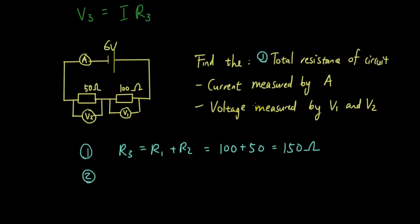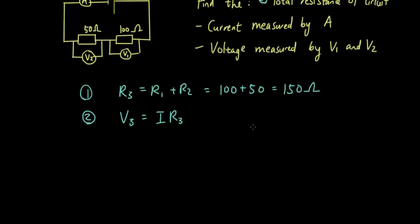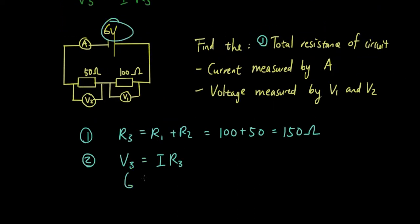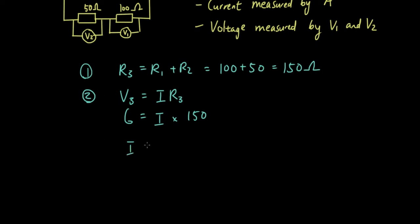Current measured by the ammeter: the total voltage equals the current times the total resistance. The total voltage is 6 volts, so 6 equals I times 150. Rearranging, I equals 6 divided by 150, and the answer is 0.04 amps.